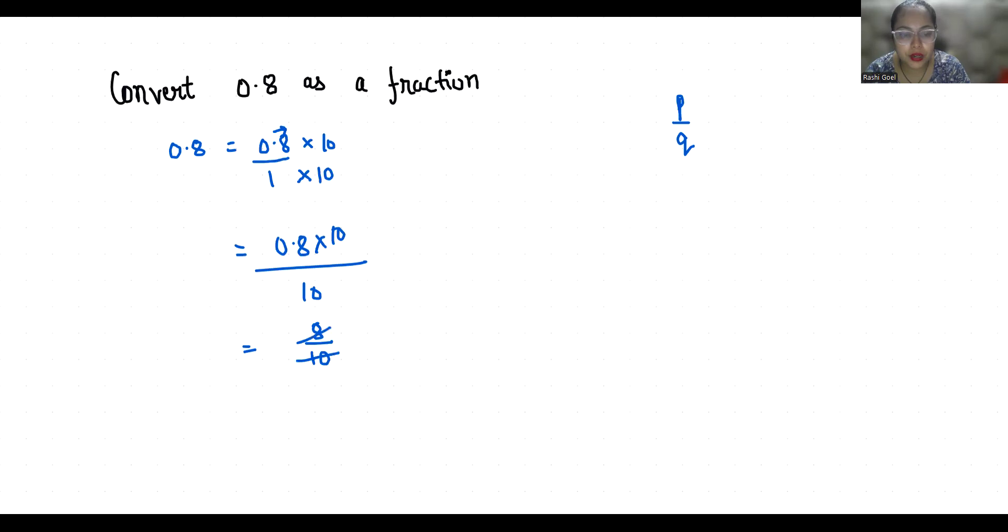Divide both numerator and denominator by 2, so it is 4 by 5. So 0.8 as a reduced fraction is 4 by 5. I hope it's clear and you find it useful. Please give us a thumbs up and subscribe to my channel. Stay tuned for more upcoming videos.